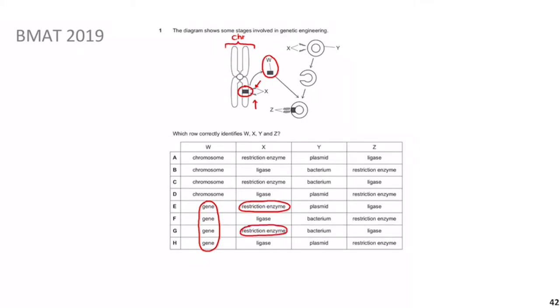Restriction enzymes, like any enzymes, have a specific active site that recognizes specific substrates. They look for boundaries between specific base sequences — for example, cutting between a C and G, or an A and T. Once we've extracted our gene, we see a circle in the diagram — that's a plasmid, which is extra-chromosomal DNA found in bacteria. Importantly, we use the same restriction enzyme X to cut open this plasmid, giving us an open-ended plasmid.